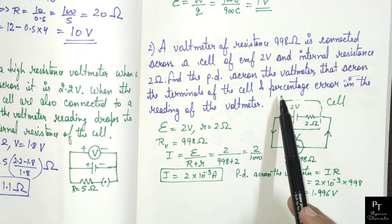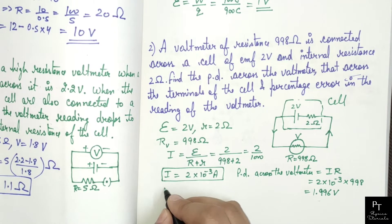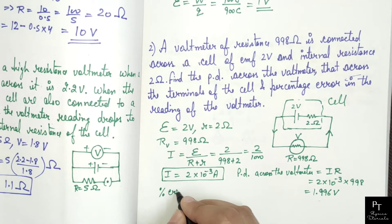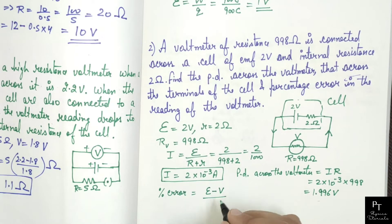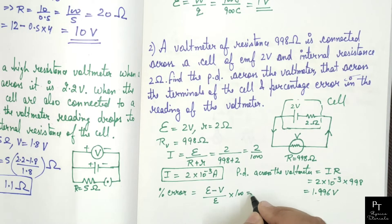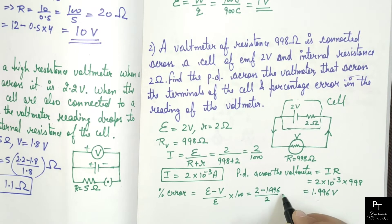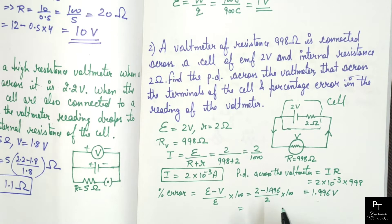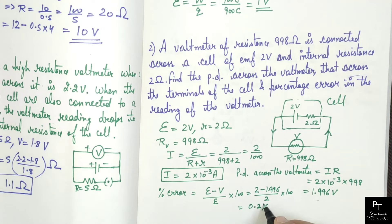Now we need to find percentage error in the reading of the voltmeter. Percentage error equals: (EMF minus terminal potential difference) divided by EMF, multiplied by 100. Substituting values: (2 minus 1.996) divided by 2, into 100. After solving, you will get percentage error equals to 0.2 percent. So this is the percentage error in the reading of the voltmeter.